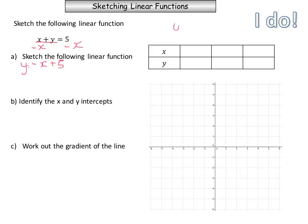Our function is y equals negative x plus 5. Substituting negative 1, 0, and 1: when x equals negative 1, we get negative negative 1 which is positive 1 plus 5 which is 6. When x equals 0, we get 0 plus 5 which is 5. And when x equals 1, we get negative 1 plus 5 which is 4. We can then plot our points: (negative 1, 6), (0, 5), and (1, 4).